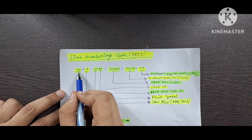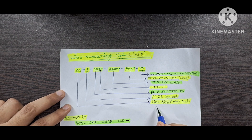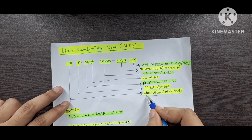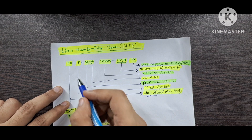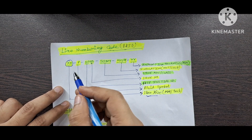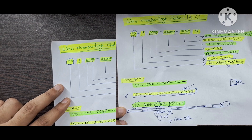The first two numbers — represented as XX — give us the information about the line size of that pipeline. For example, this is my pipeline which is coming from the distribution and going into vessel one. The line size could be in mm as well as in inches, for example 50 mm or 2 inch.